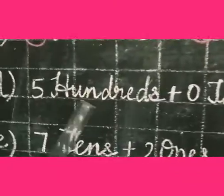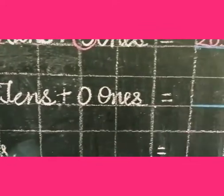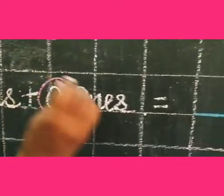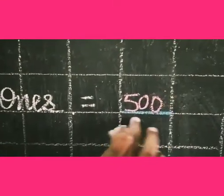Next one: 5 hundreds plus 0 tens plus 0 ones. I am going to circle the numbers: 5, 0, 0. 5, 0, 0 equals 500.